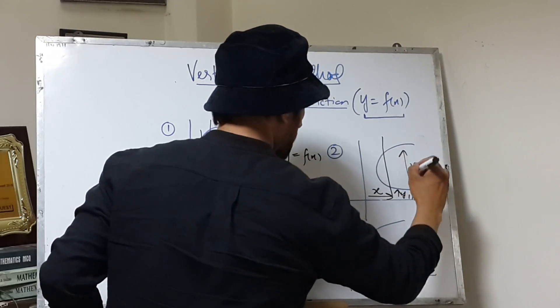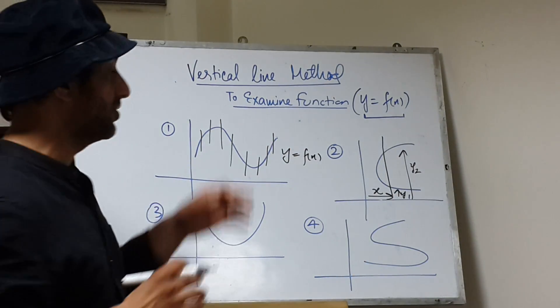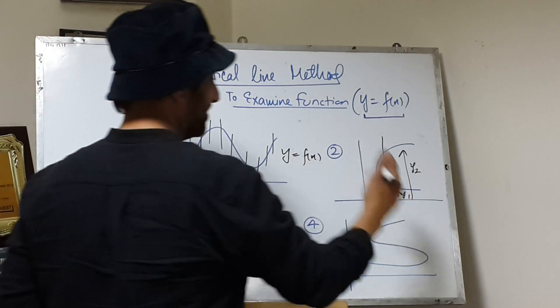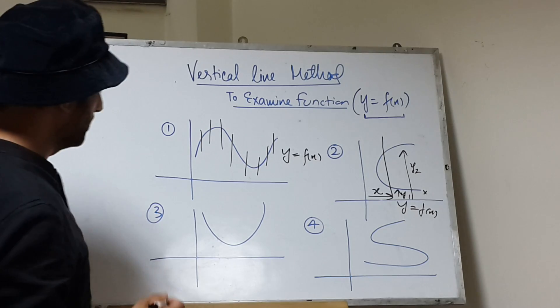there are two y components which is against the definition of the function. So this curve is not a function of the type y equals f. Coming on to third.